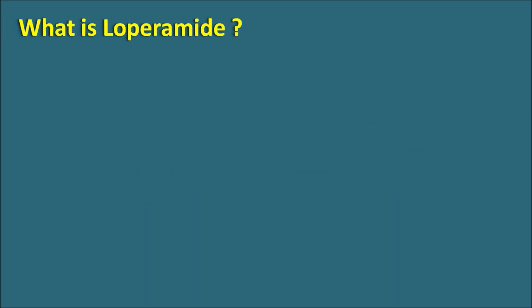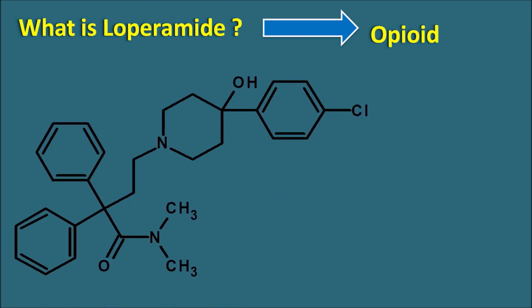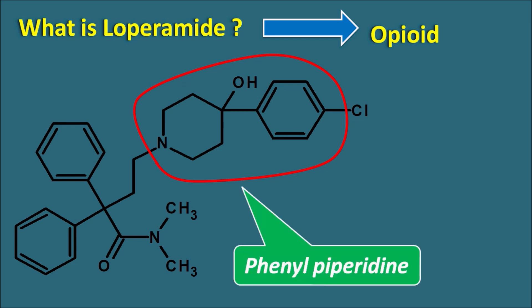What is Loperamide? Loperamide is one of the opioids which is having a structure that does not resemble a morphine-like structure, but it is a modified morphine derivative where a few of the rings are opened. Only two rings of the morphine are present in this structure — the phenyl ring and the piperidine ring — and that's why Loperamide belongs to the chemical class of phenylpiperidines.